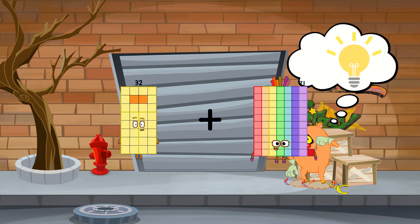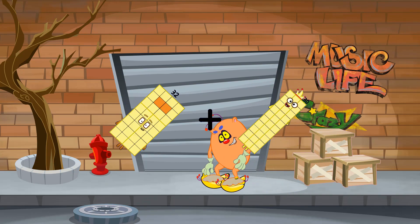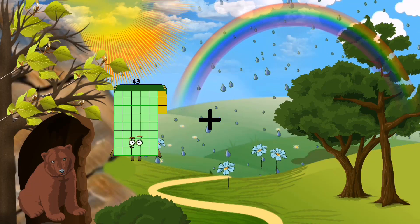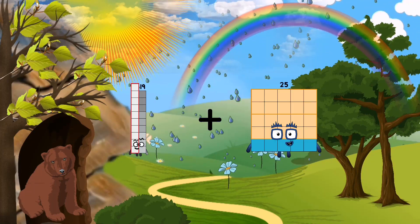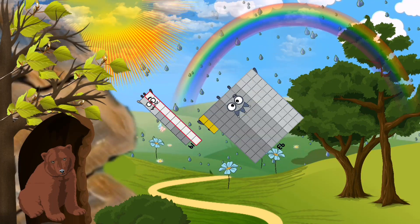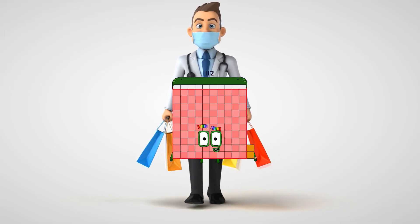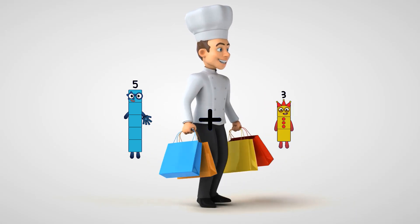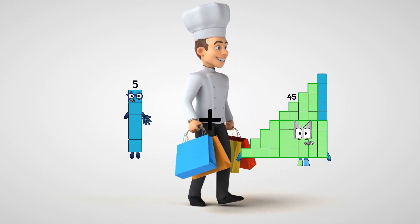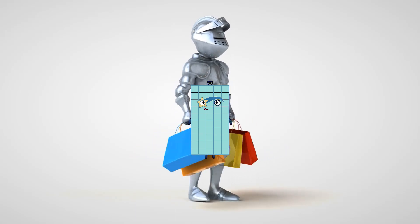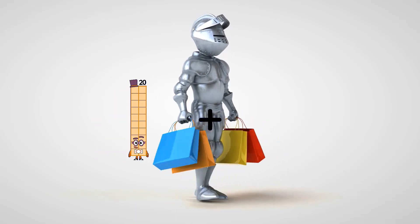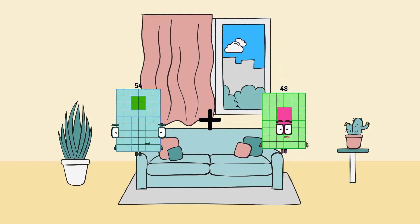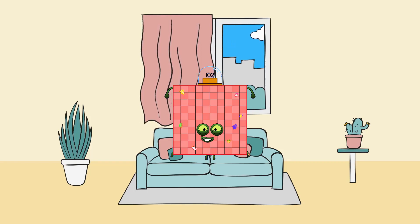53 plus 45 equals 98. 32 plus 30 equals 62. 19 plus 93 equals 112. 5 plus 45 equals 50. 54 plus 48 equals 102.